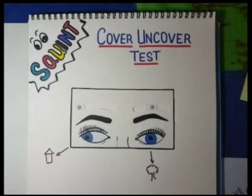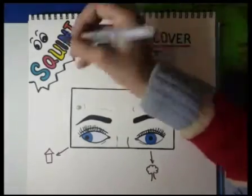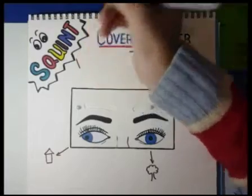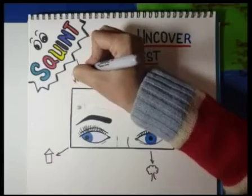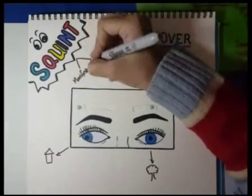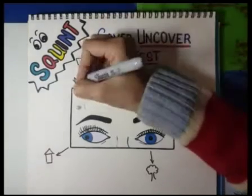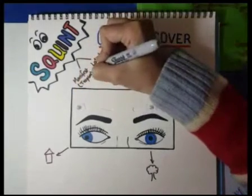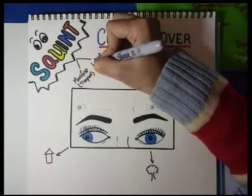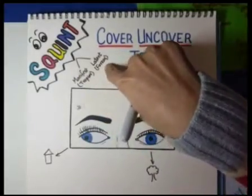Now we are going to talk about the types of squint. Squint is divided into two main types: manifest squint and latent squint. Manifest squints are called tropias, and latent squints are called phorias — you can say heterotropias and heterophorias.